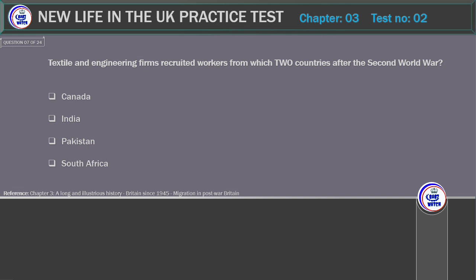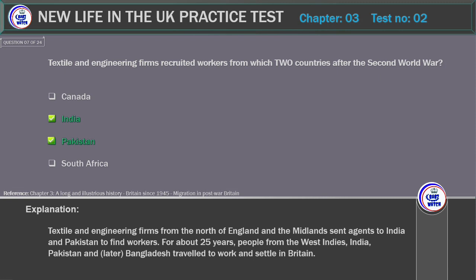Textile and engineering firms recruited workers from which two countries after the Second World War? Options: Canada, India, Pakistan, South Africa. Correct answer: India and Pakistan. Explanation: Textile and engineering firms from the north of England and the Midlands sent agents to India and Pakistan to find workers. For about 25 years, people from the West Indies, India, Pakistan and, later, Bangladesh travelled to work and settle in Britain.